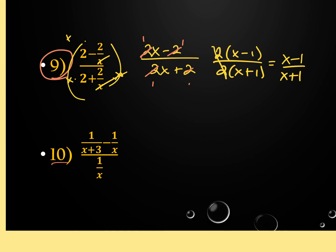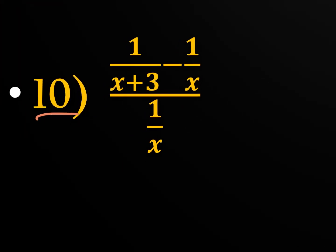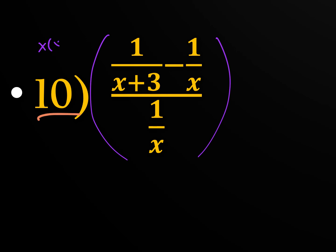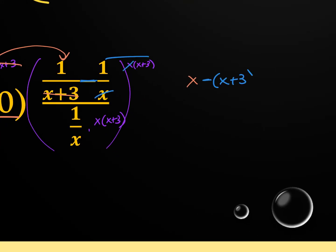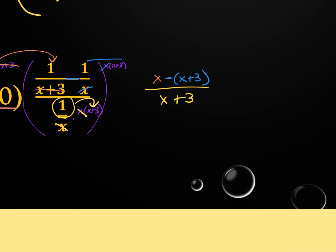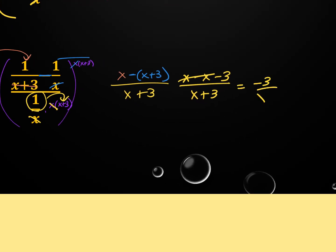For example ten, the LCD is x(x+3). Multiplying all three terms by x(x+3): the top left fraction has (x+3) cancel, giving x·1 = x. The top right has x cancel, giving minus 1·(x+3) = -(x+3), distributing the negative to both terms. The denominator has x cancel, giving 1·(x+3) = (x+3). Distributing the negative: x minus x minus 3 over (x+3). The x's cancel leaving -3 over (x+3), which cannot be simplified.